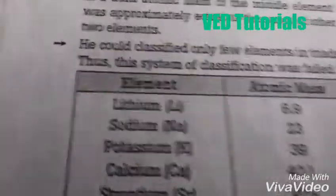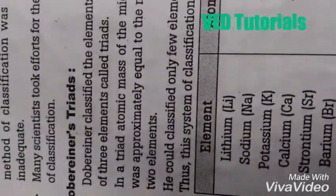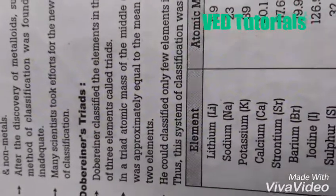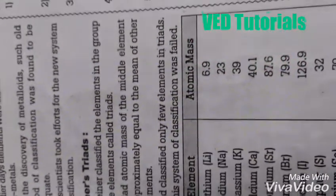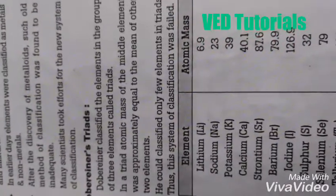See about Dobereiner. Dobereiner was a German scientist. Dobereiner classified the elements in groups of three elements called triads.